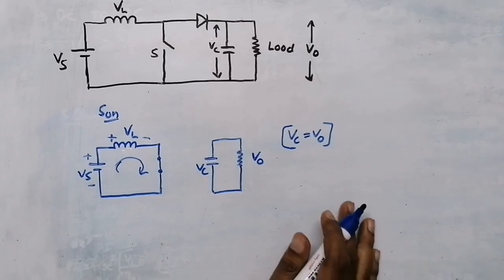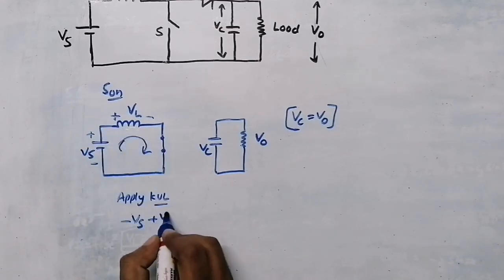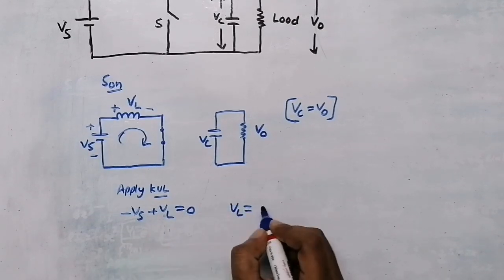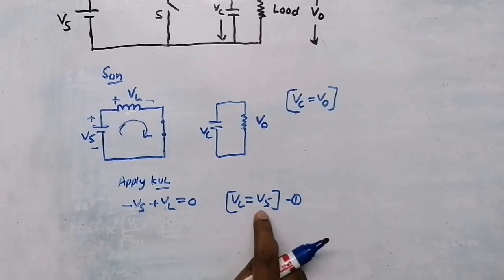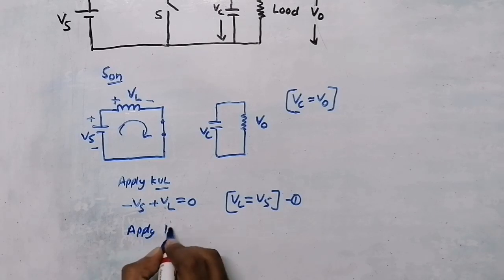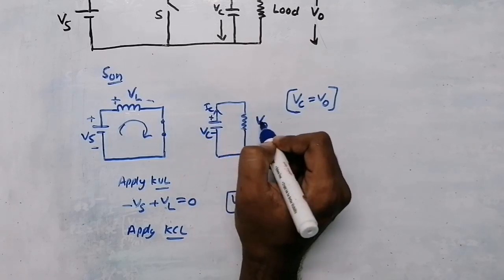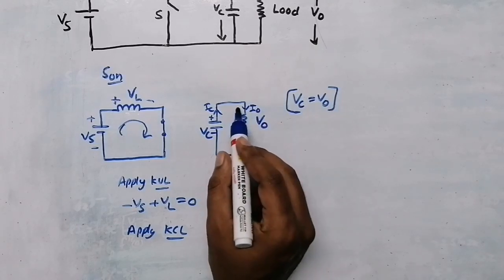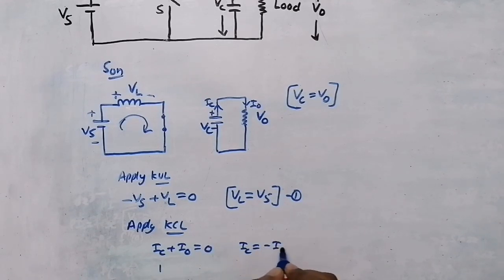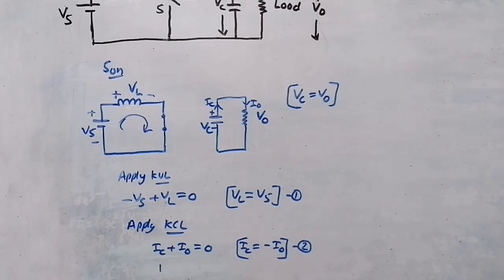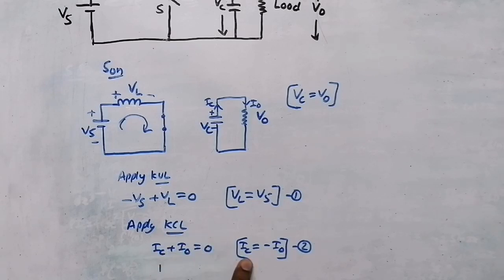Now I am going to apply KVL — Kirchhoff's Voltage Law — which states that the sum of voltages in a closed loop equals zero. So here it is: minus VS plus VL equals zero, from which I get VL equals VS. That is my first equation. When we apply KVL, inductor voltage equals source voltage because the inductor is getting charged. Now applying KCL — Kirchhoff's Current Law — in this loop: the capacitor delivers current IC and the load receives current I₀. Applying KCL gives IC plus I₀ equals zero, from which IC equals minus I₀. That is my second equation.